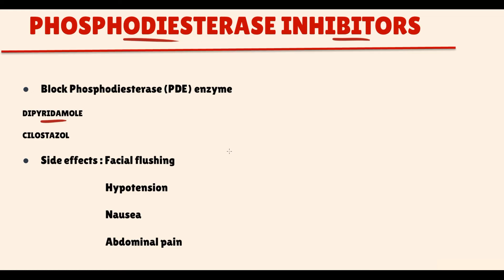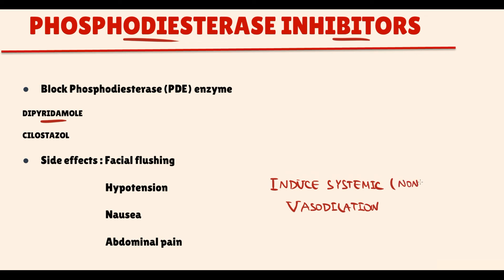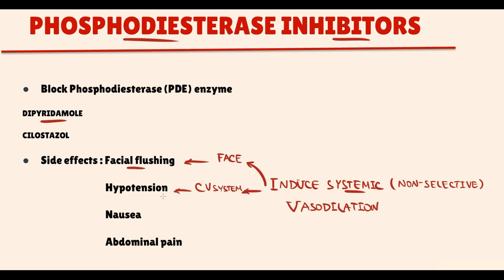The side effects of phosphodiesterase inhibitors are related to their vasodilation properties. The major problem is that they are non-selective drugs, meaning they act on the entire organism and cause generalized vasodilation. On the face, this manifests with facial flushing. In relation to the cardiovascular system, it causes hypotension. Relaxation of smooth muscles in the GI tract causes abdominal pain and nausea.